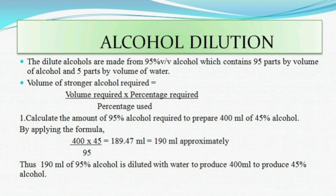Let's see an example. Calculate the amount of 95% alcohol required to prepare 400 ml of 45% alcohol. Volume required is 400 ml, percentage required is 45, divided by 95. So: 400 × 45 ÷ 95 = 189.47 ml, approximately 190 ml of 95% alcohol.